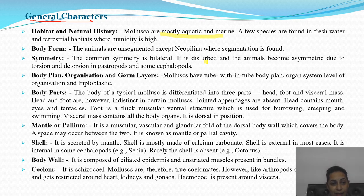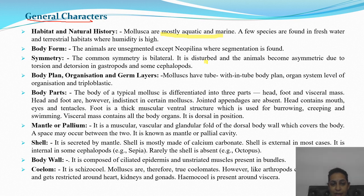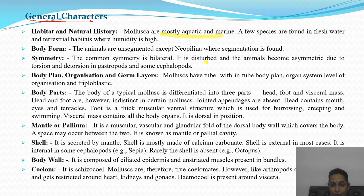The head has mouth, eyes, and tentacles. The foot is a thick muscular ventral structure used for burrowing, creeping, and swimming. The visceral mass contains all the body organs and is dorsal in position. As seen in an octopus — the hump is the visceral mass, the appendages are the foot, and the other side is the head part.